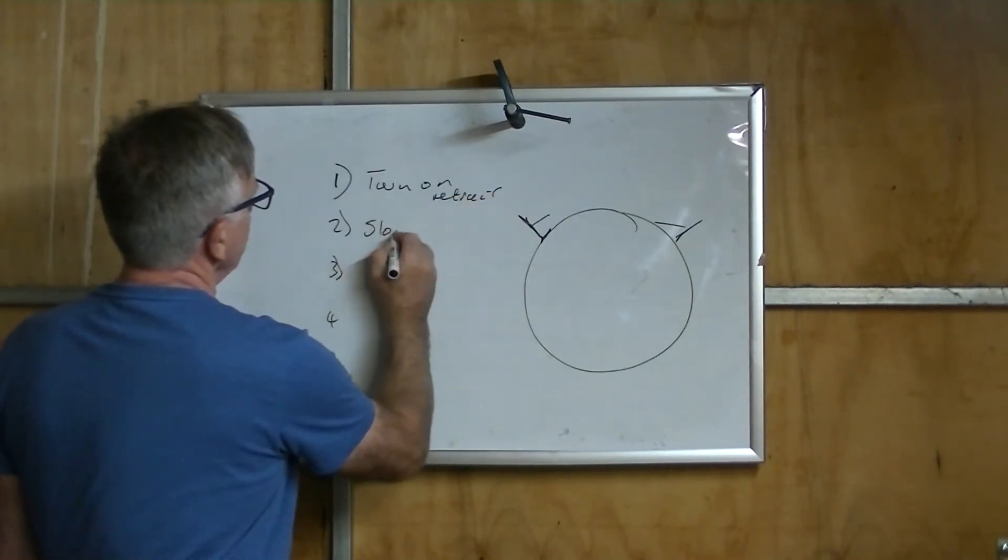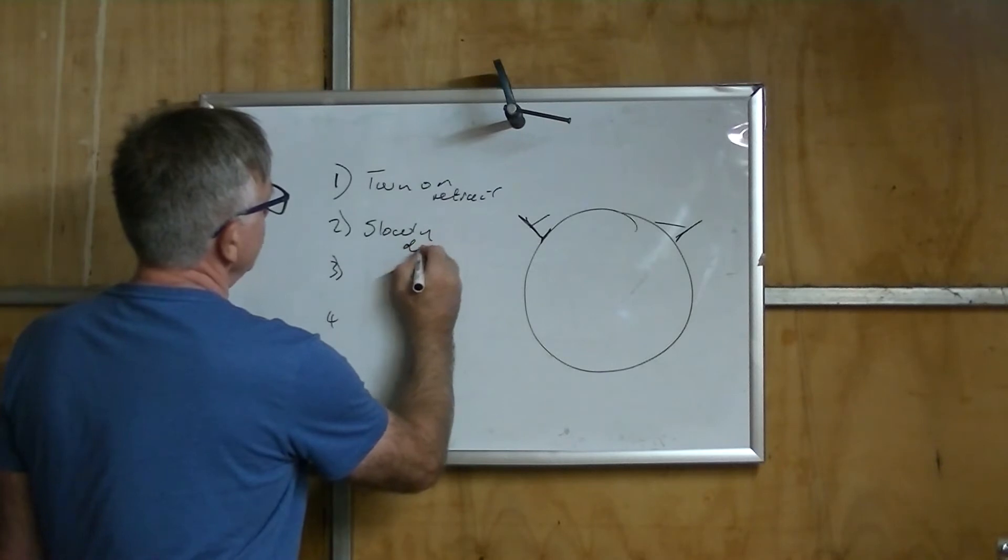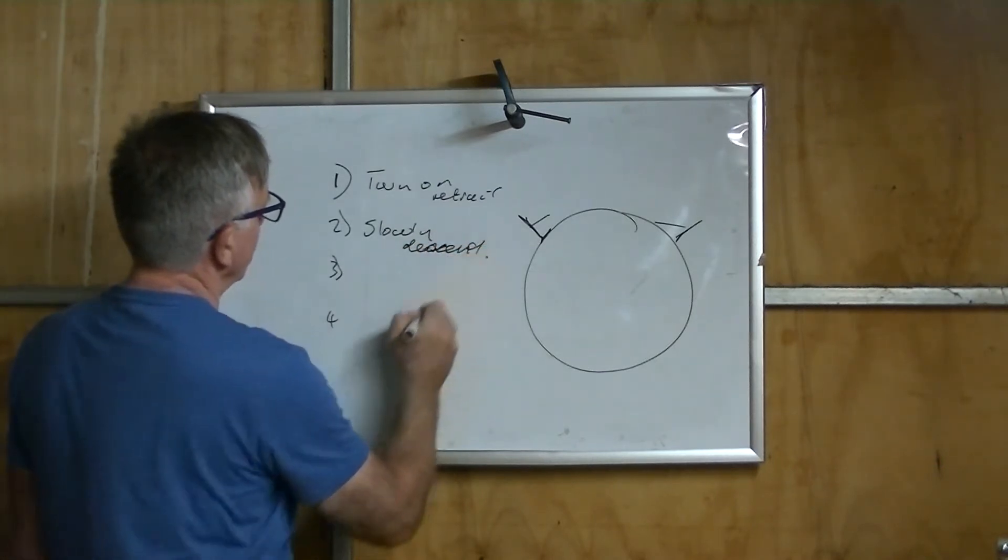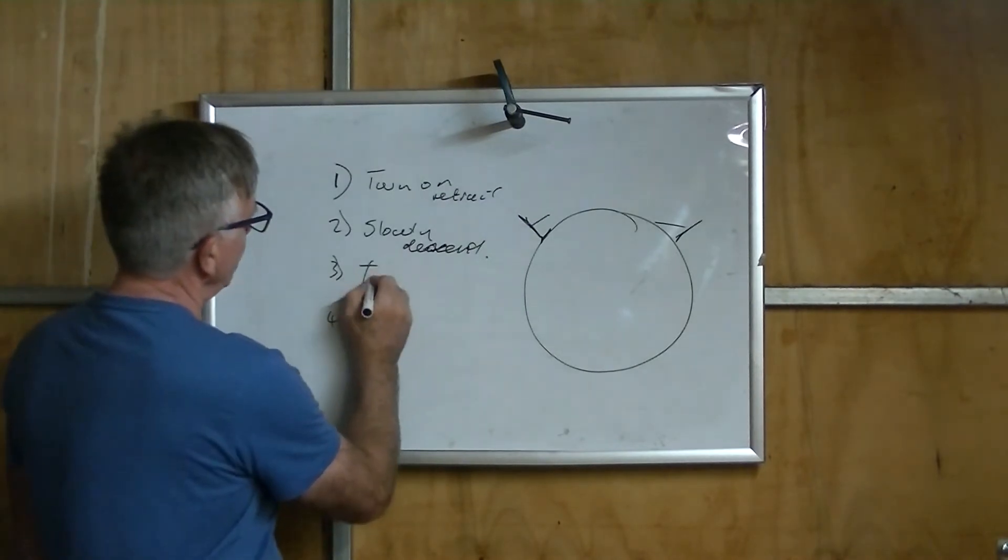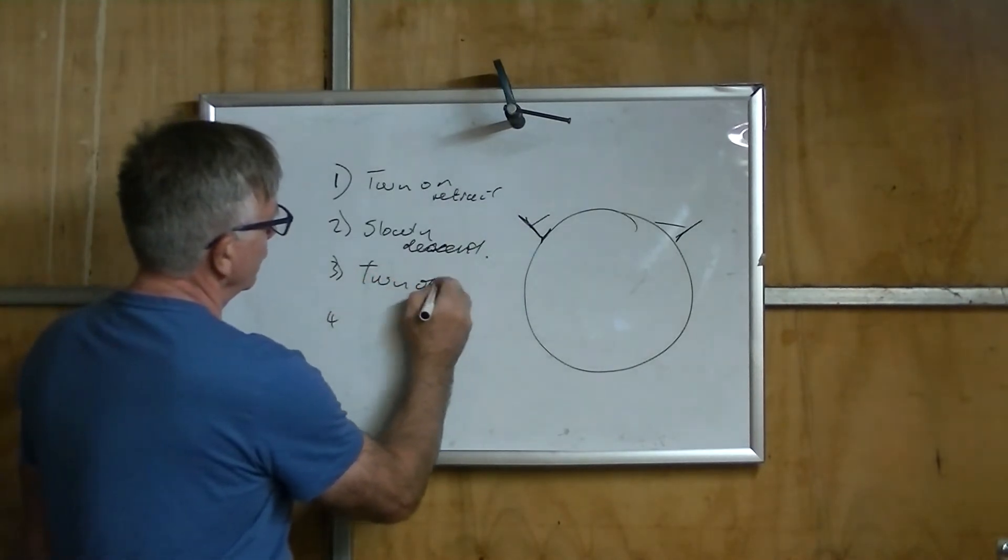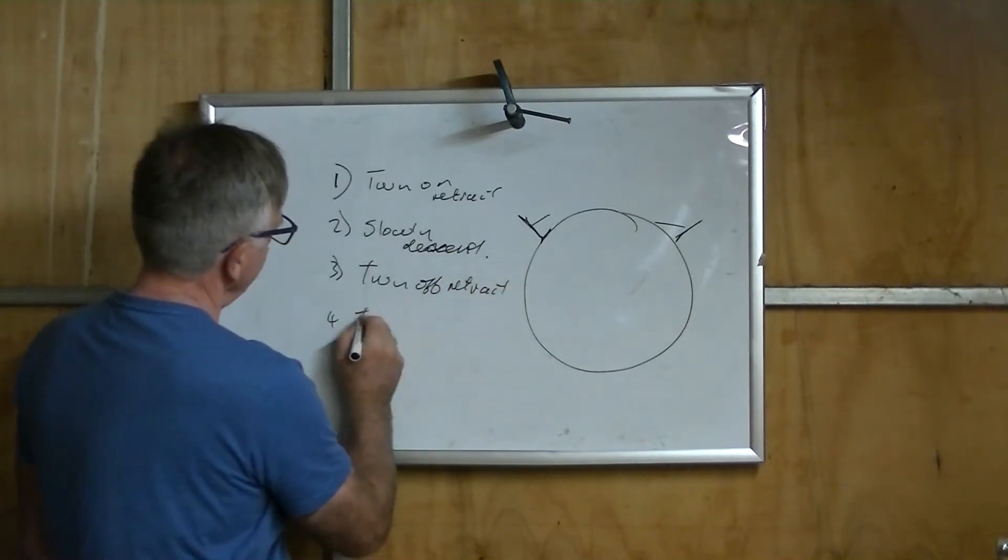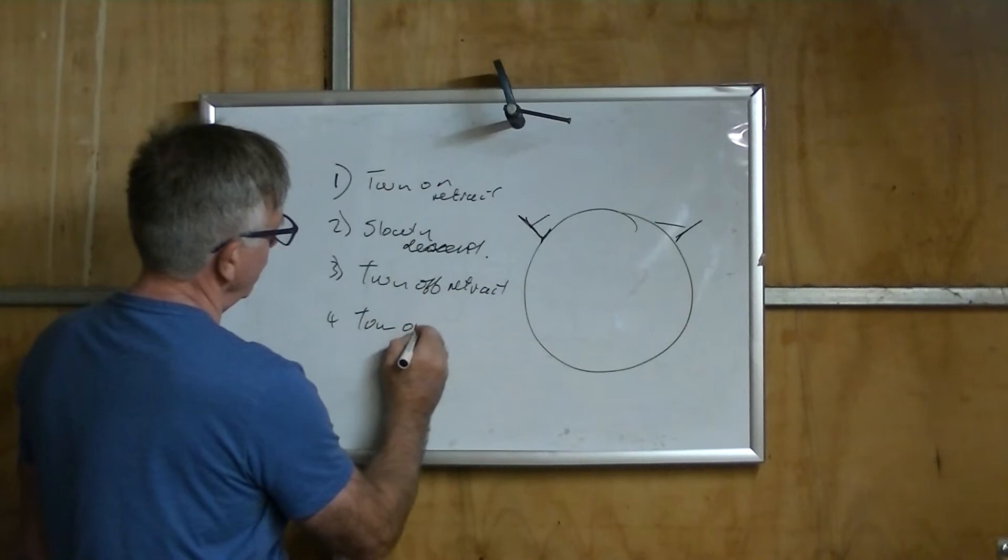I want it to slowly descend, descend. Thirdly, I want it to turn off the retract so that it stays there. And then turn on the hydro.